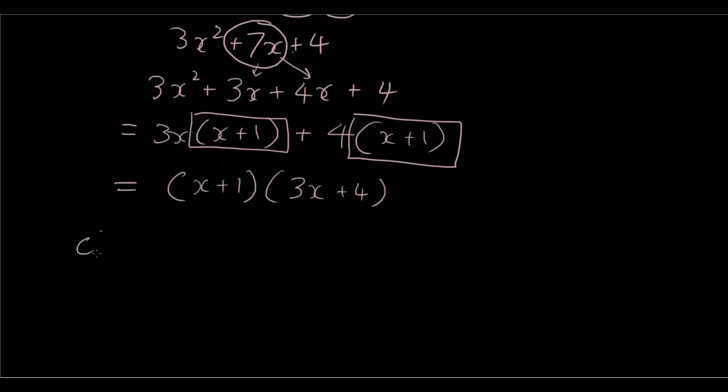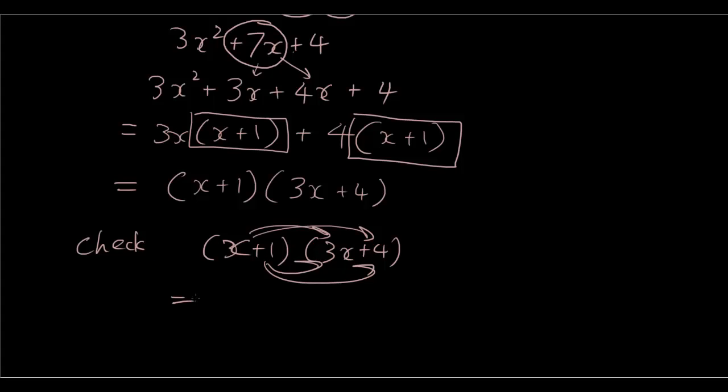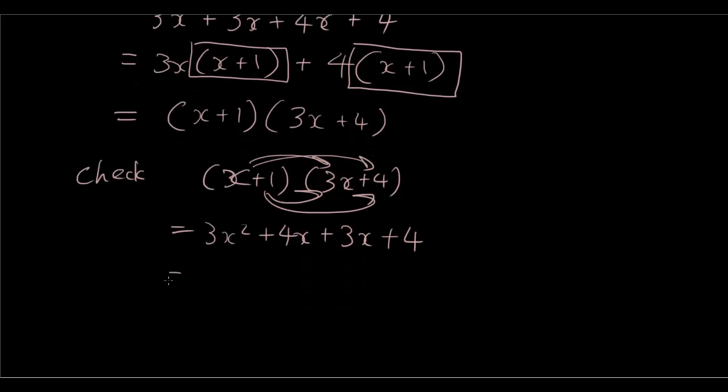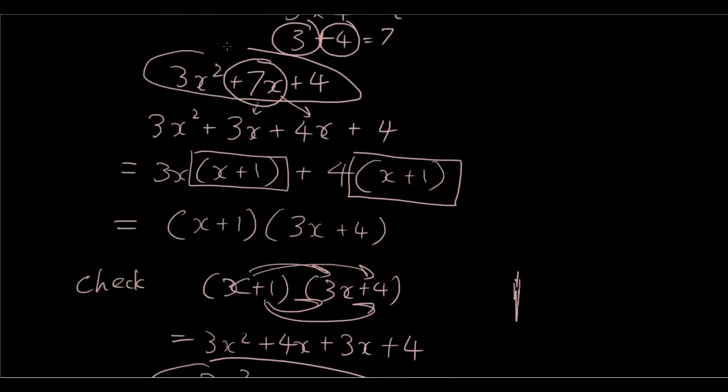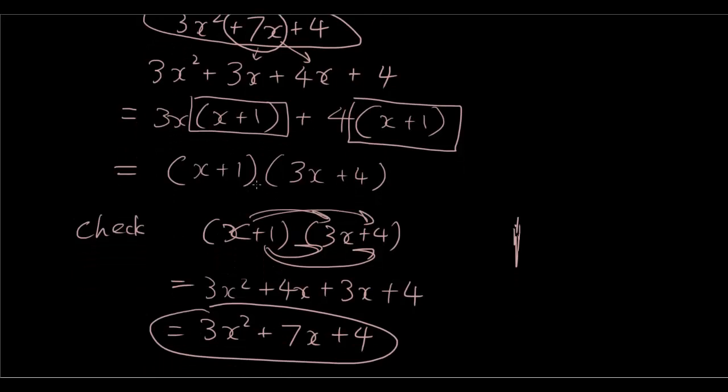Check. If you expand this equation, x plus 1, 3x plus 4, x times 3x is 3x squared. x times 4 is plus 4x. 1 times 3x is 3x. 1 times 4 is 4. So let's simplify this, which makes it 3x squared plus 7x plus 4. Because 4 plus 3 is 7. And that is exactly the same as the question we had before. So that means that we did it correctly. We have factorized it correctly because we've expanded it and checked that the answer is same as the question we had initially.